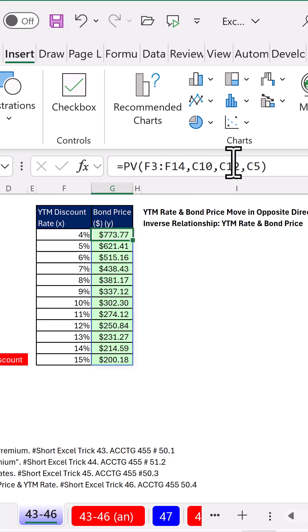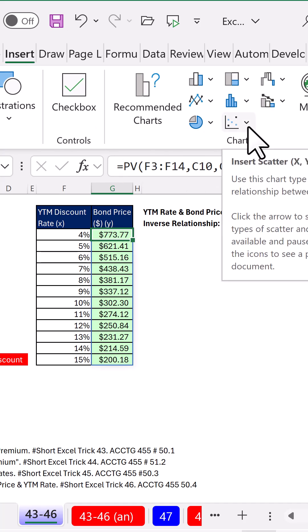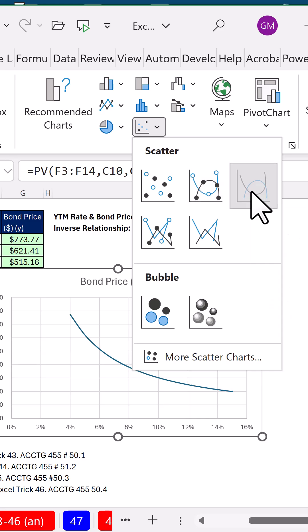So I select a cell, insert charts, dropdown for XY scatter, and we want smooth line.